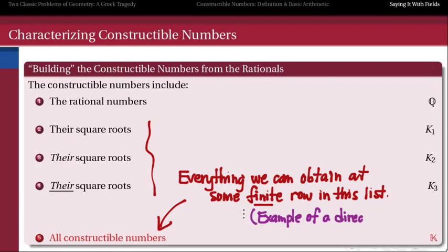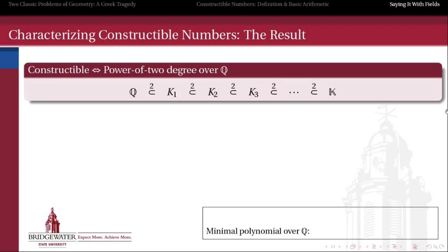This is an example of a more general construction in mathematics called a direct limit — not something covered in this class, but in an upper-level algebra course at the graduate level you'll do more work with direct limits. So how are we going to characterize constructible numbers? What makes a constructible number constructible from the point of view of algebra and field theory? Take √5 for example. How far up the ladder did we have to go before we found √5? We just had to go up to K1, because it was the square root of a number that began its life as rational — only one step removed from the rational numbers. So we can find a polynomial equation with rational coefficients that √5 satisfies, and the degree of that polynomial is 2. t² minus 5 equals 0 is the minimal polynomial of √5 over the rational number field.